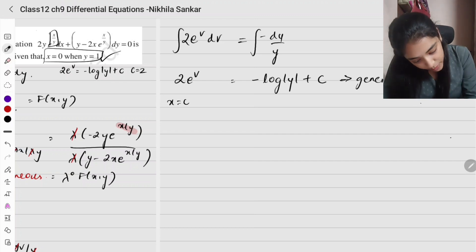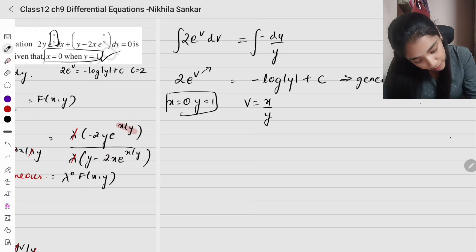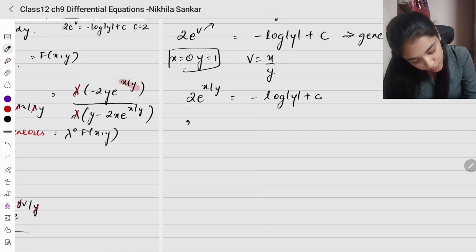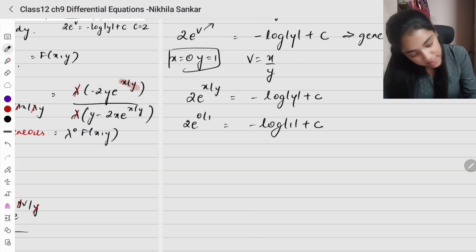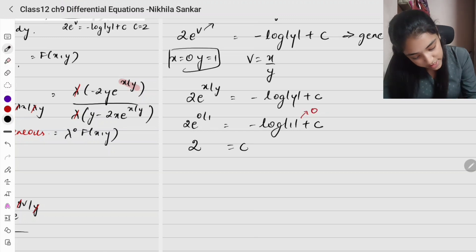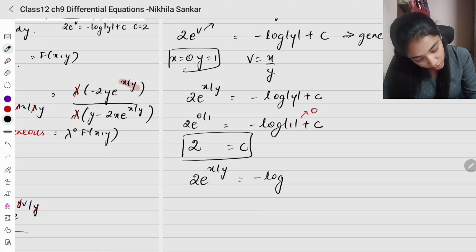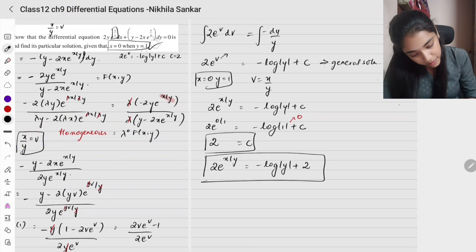For the particular solution, substitute x = 0 and y = 1. Since v = x/y, substituting back gives 2 e^(x/y) equals minus log|y| plus c. Plugging in: 2 e^(0/1) equals minus log|1| plus c. Since log 1 = 0 and e^0 = 1, we get 2 = c. So the particular solution is 2 e^(x/y) equals minus log|y| plus 2.